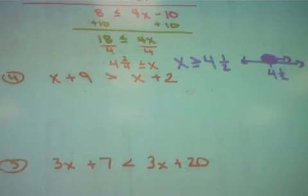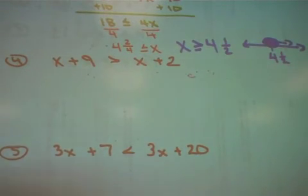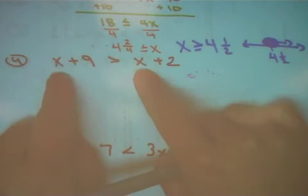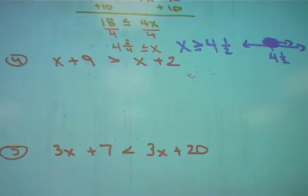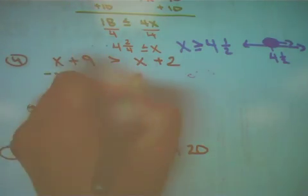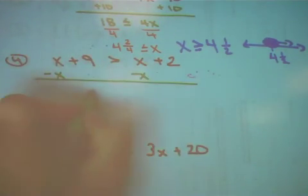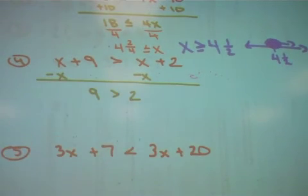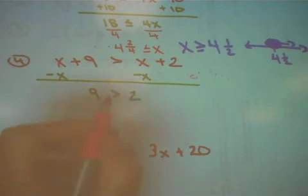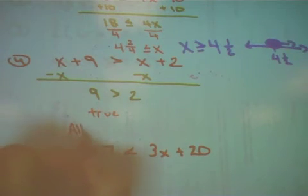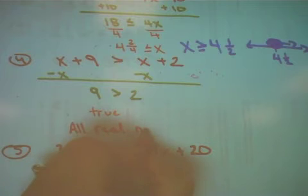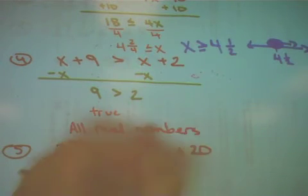Let's look at example number 4. These are both x's. So it doesn't matter which one we move. But to get rid of a positive, I'm going to subtract. Subtract x. Subtract x. 9 is greater than 2. Is that statement true or false? That's right. The statement is true. So therefore, what we write for the answer is that all real numbers are the solutions.